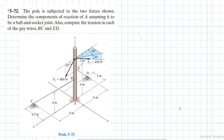Welcome. The problem reads: the pole is subjected to the two forces shown. Determine the components of reaction at A, assuming it to be a ball and socket joint. Also compute the tension in each of the guide wires BC and ED. This problem comes from Engineering Mechanics: Statics, 13th edition by RC Hibbeler.